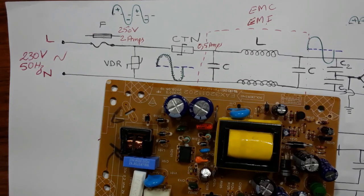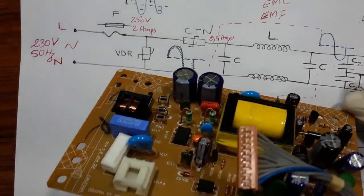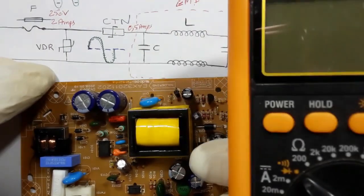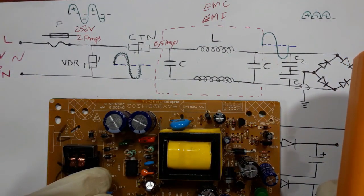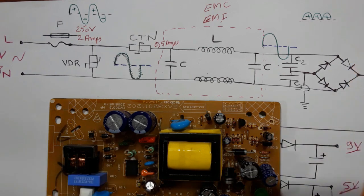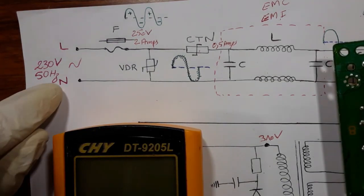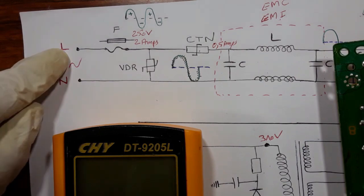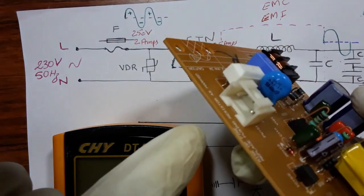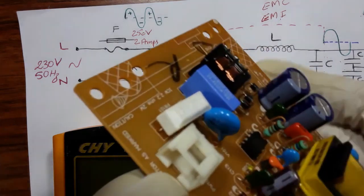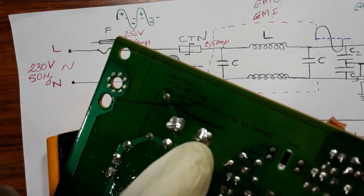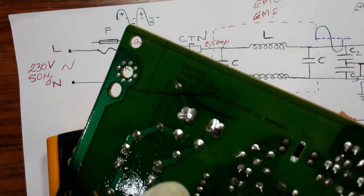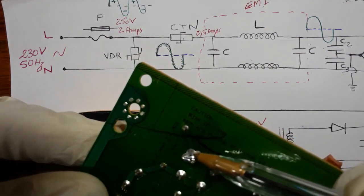We're going to analyze both the circuit diagram and the circuit boards using the multimeter to check and track all the components in the motherboard. The first part, as you can see, we have neutral and line here — in the motherboard this is the input power. If we look at the back of the motherboard, we have the neutral and the line, and the line is always connected to the fuse.